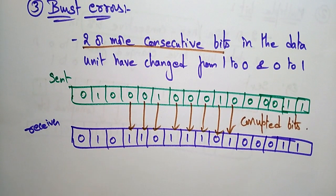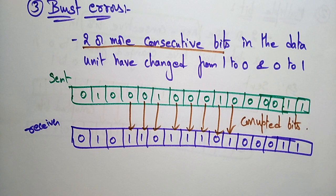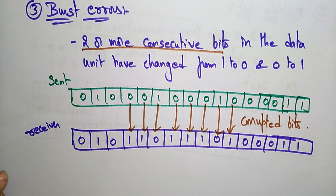These are the different types of errors: single bit error, multiple bit error, and burst error. In the next video, I will explain what is error detection, how we are going to correct errors, and the different techniques involved in error detection and correction. Thank you.